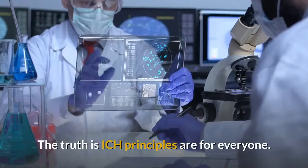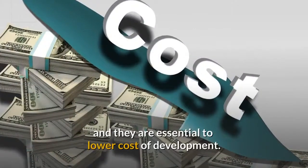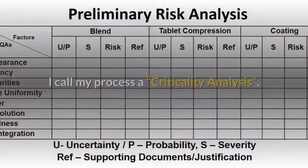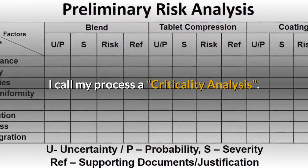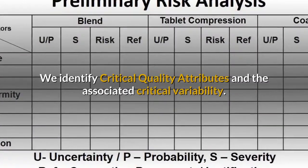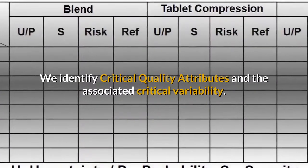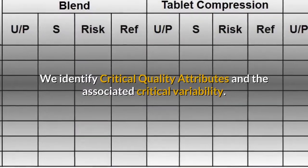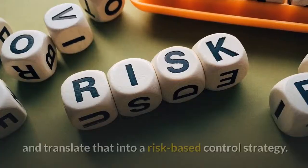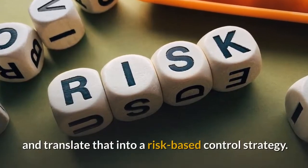The truth is ICH principles are for everyone and they are essential to lower the cost of development. We call our process a criticality analysis. We identify critical quality attributes and the associated critical variability, then take the data generated during process development and translate that into a risk-based control strategy.